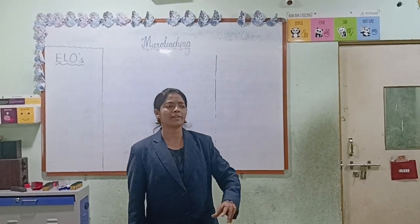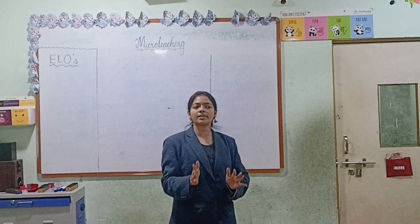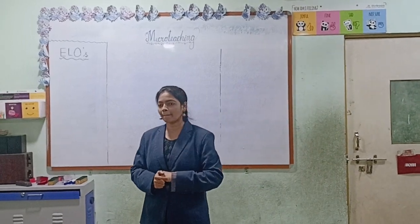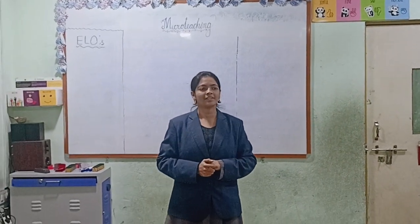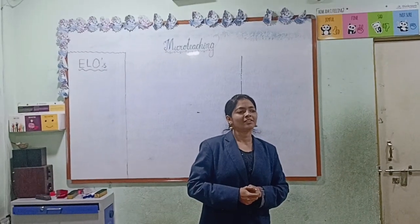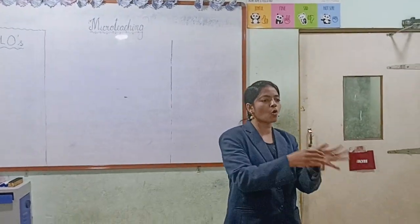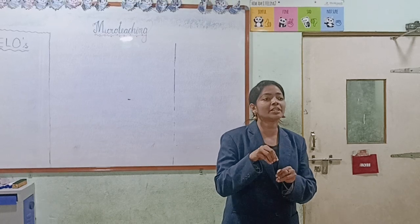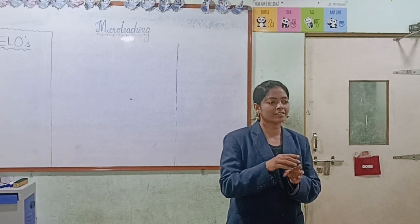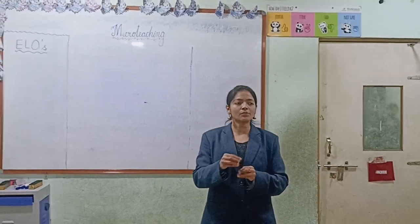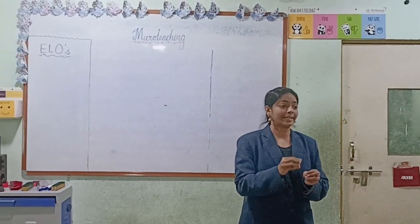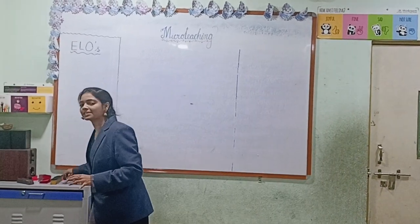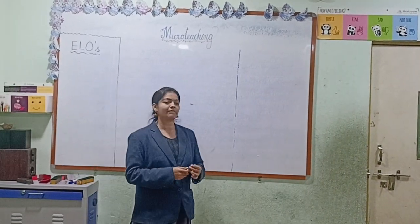How can you identify the things around us as living or non-living things? They can grow, they can move. So all these — grow, move — these all are features of living things. So these features are also called characteristics. Today my topic is characteristics of a living thing.